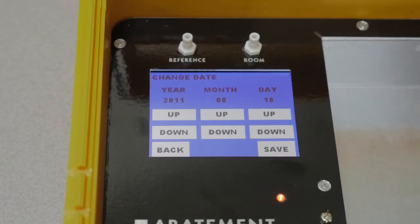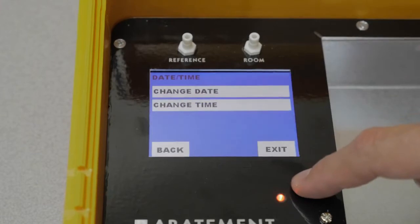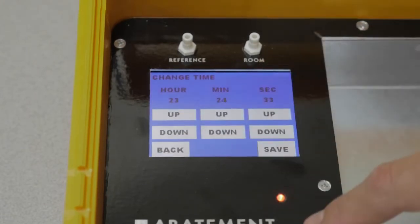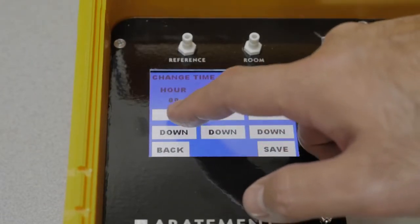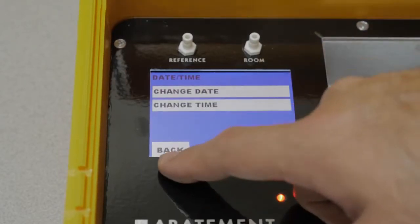The settings can be changed with the up and down buttons for each item. The save button will save the date and exit back into the submenu. You can follow the same procedure to change the time. The back button will exit back to the submenu.